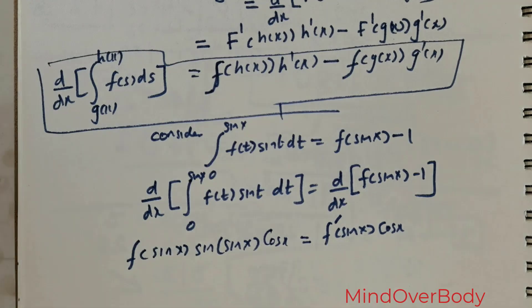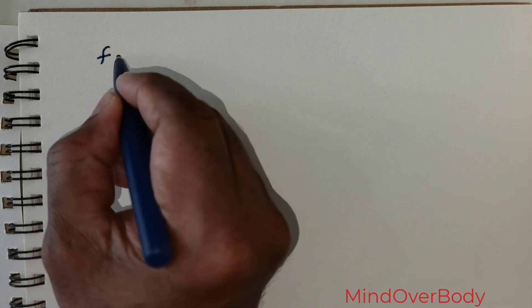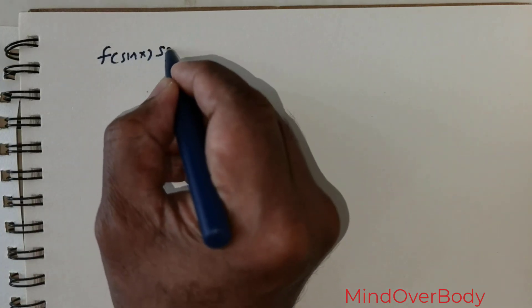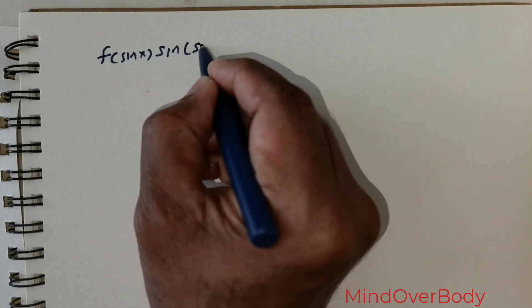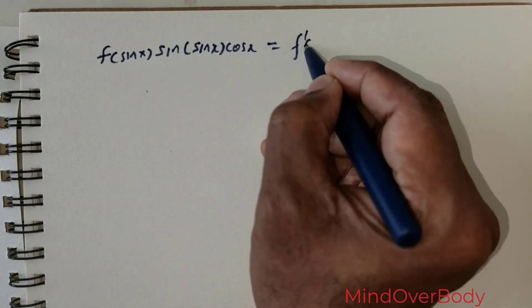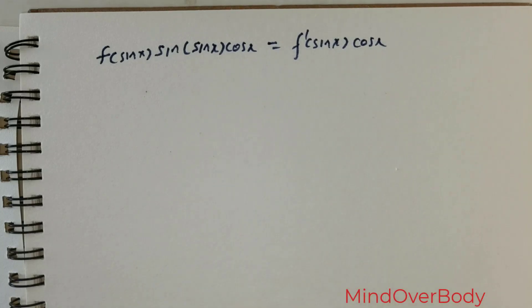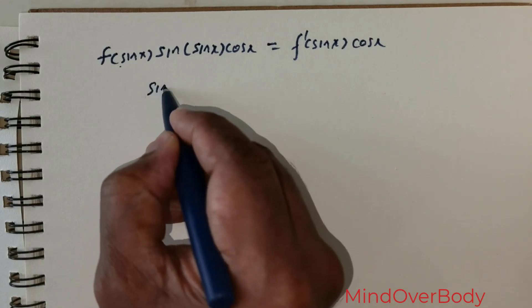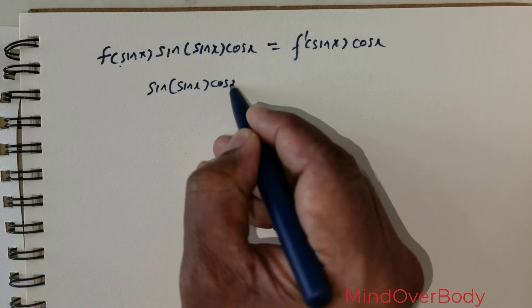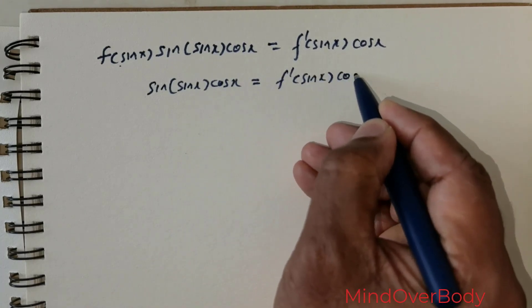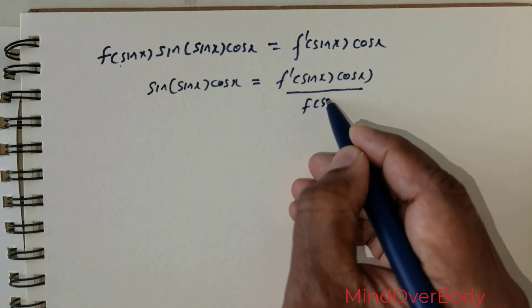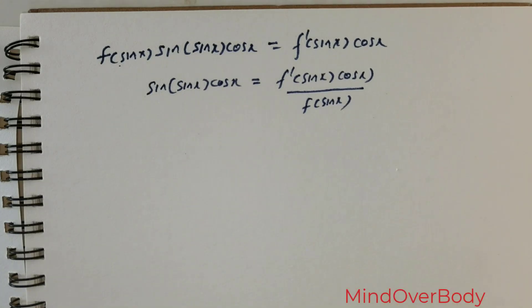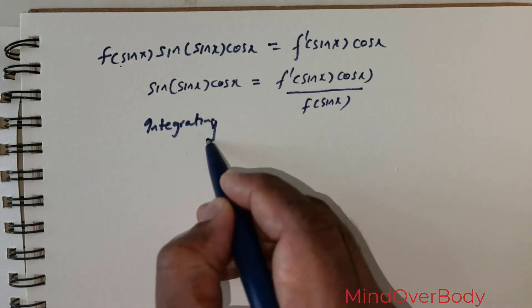From this the solution is straightforward. We have f(sin x)·sin(sin x)·cos x = f'(sin x)·cos x. Rearranging, sin(sin x) equals f'(sin x)·cos x divided by f(sin x). We now integrate both sides with respect to x: the integral of sin(sin x)·cos x dx equals the integral of f'(sin x)·cos x / f(sin x) dx.